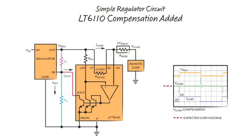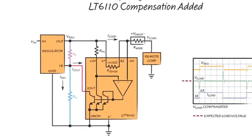The LT6110 detects the load current and sets a proportional current at its output that can be used to adjust a regulator's output voltage to compensate for the drop in the wire. The accuracy and output current range of the LT6110 allow it to compensate a wide range of regulator circuits to a high degree of precision.